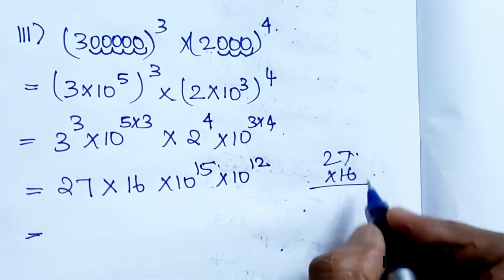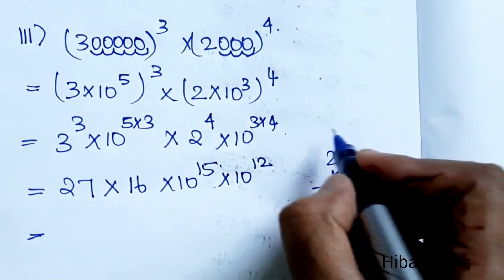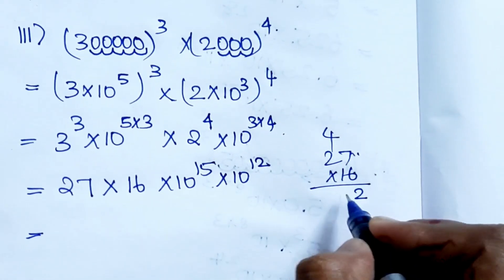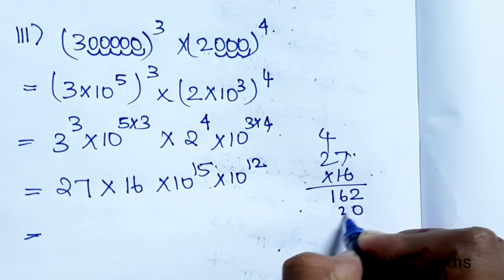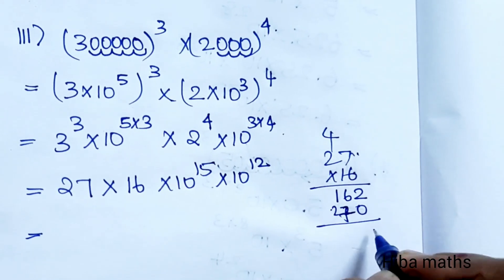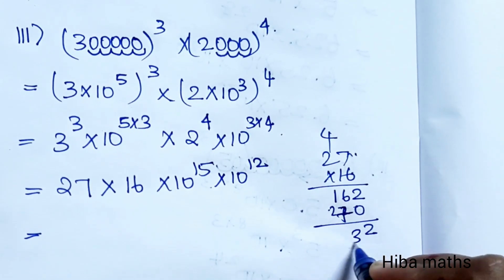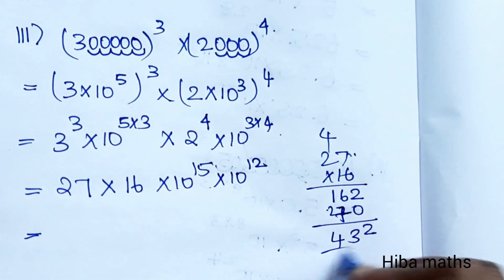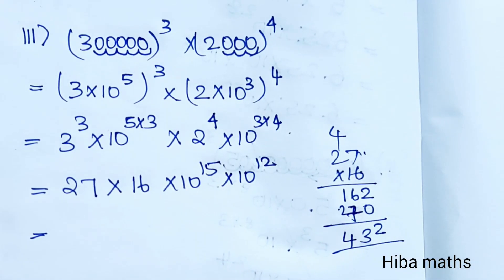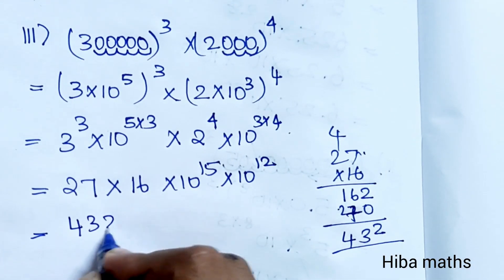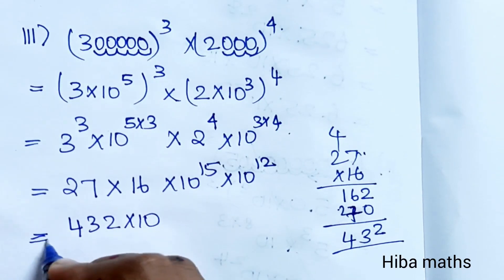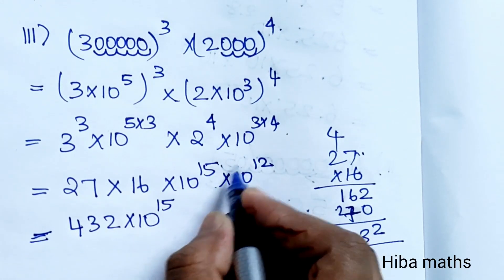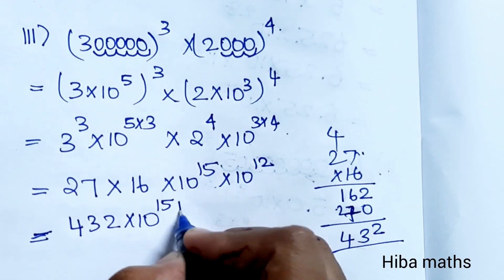10 power 3 plus 4 is 12. 27 into 16: 7 times 6 is 42, carry 4 — 12 is 16. So 27 into 16 equals 432. Answer: 432 into 10 power 15. The multiplication is now done.